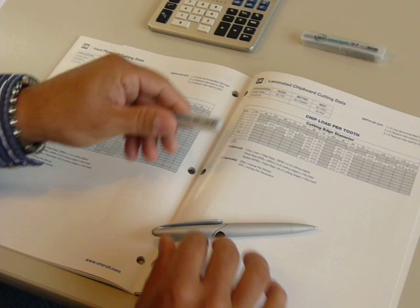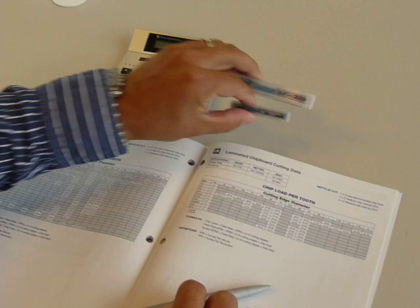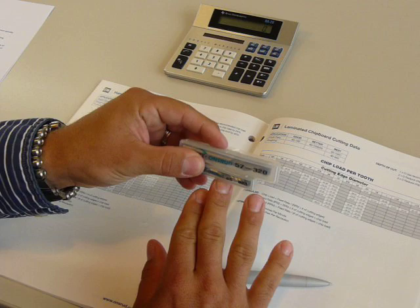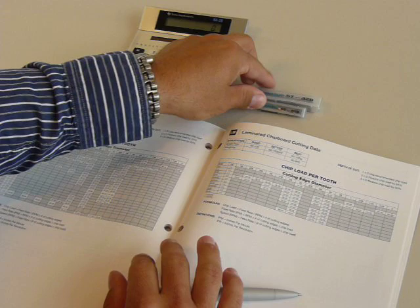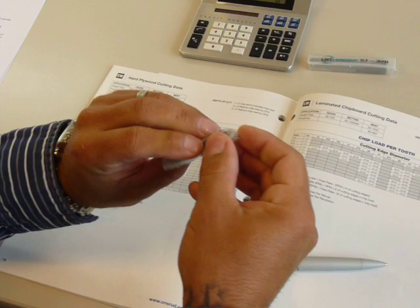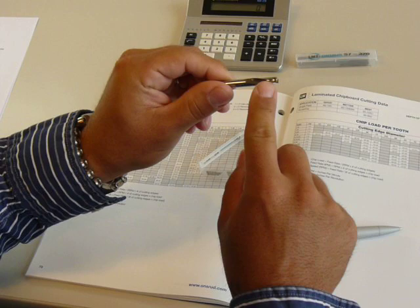For this video, we will be using two different tools, two different of our standard tools to show you how to properly optimize the speed and feed rate for your application. Now the first tool we will be using will be the standard part number 65-023, which is a single flute. It only has one flute. We call it a super-o flute.